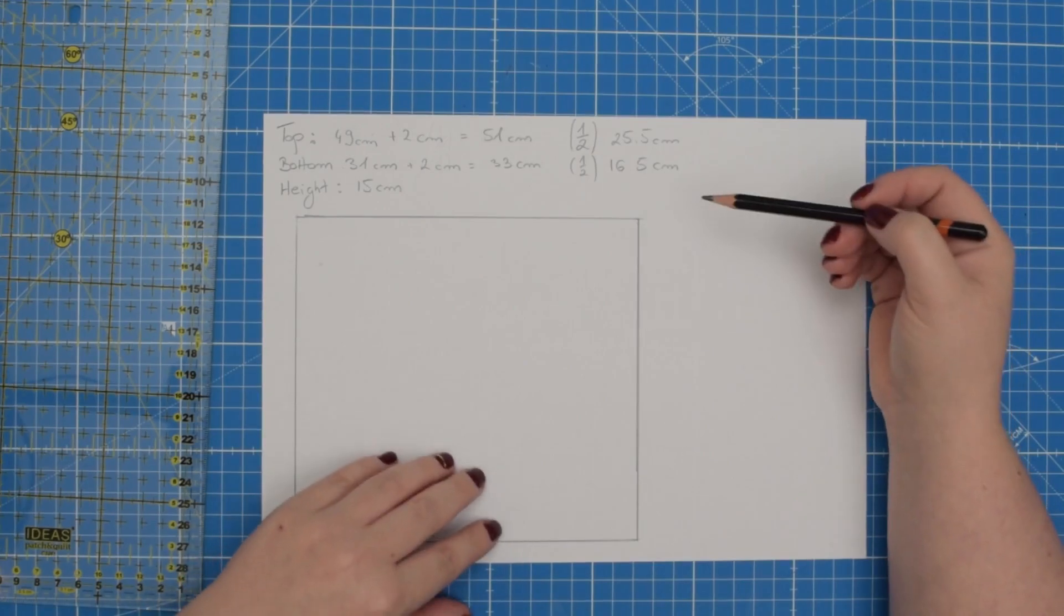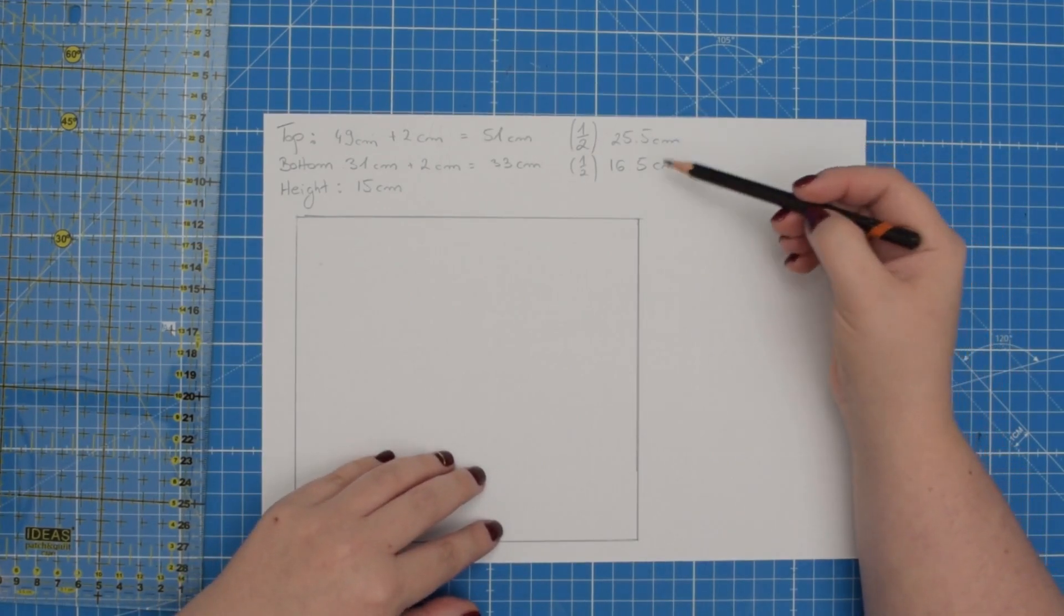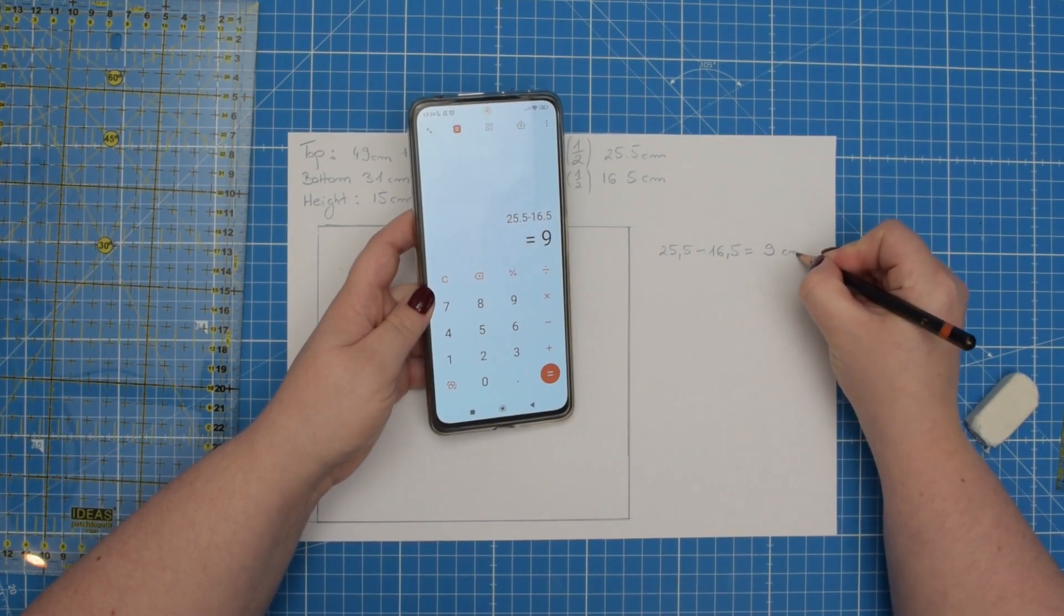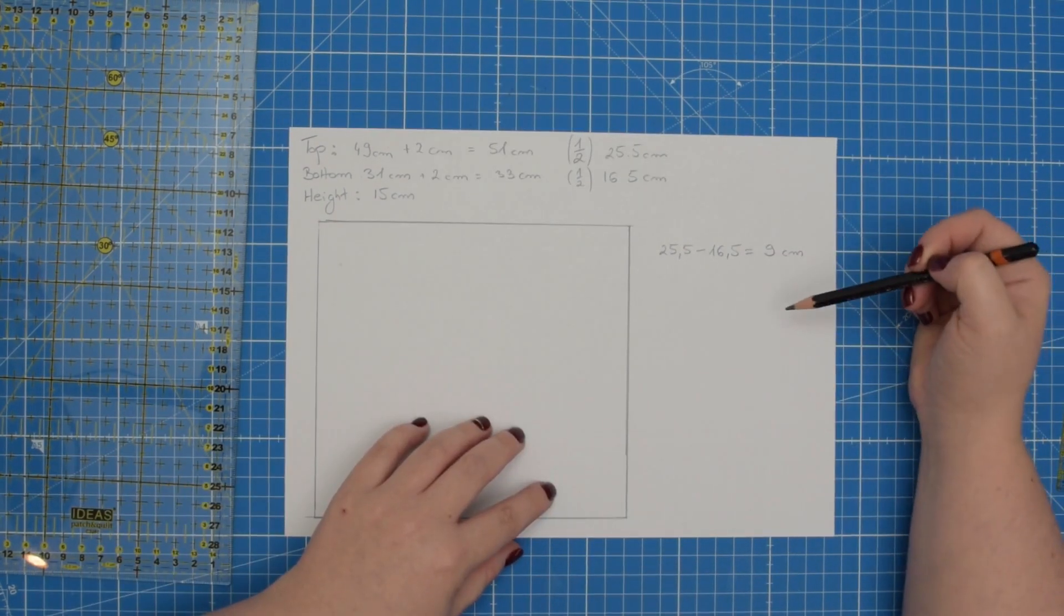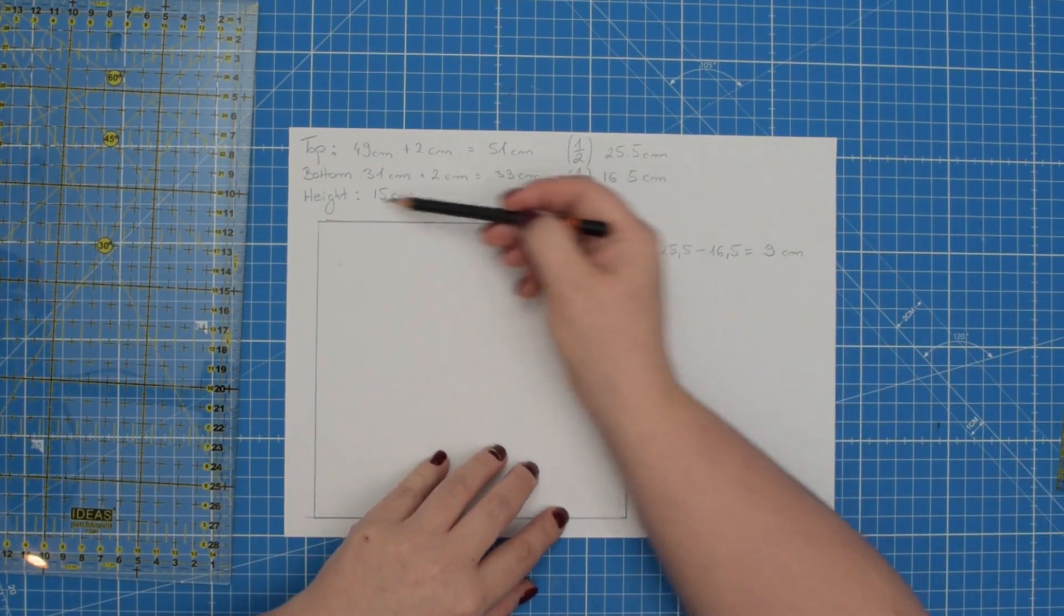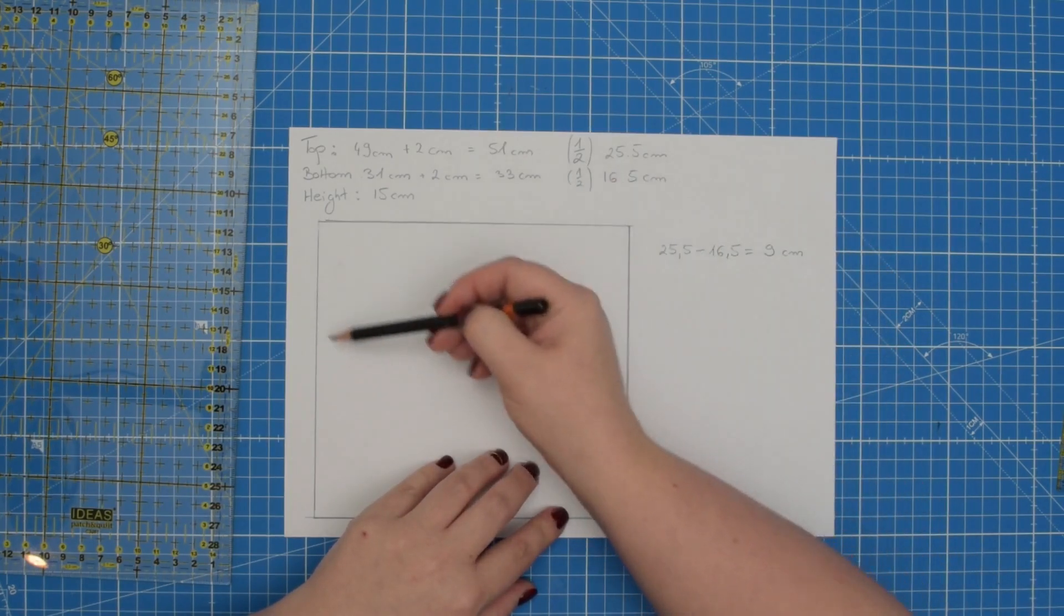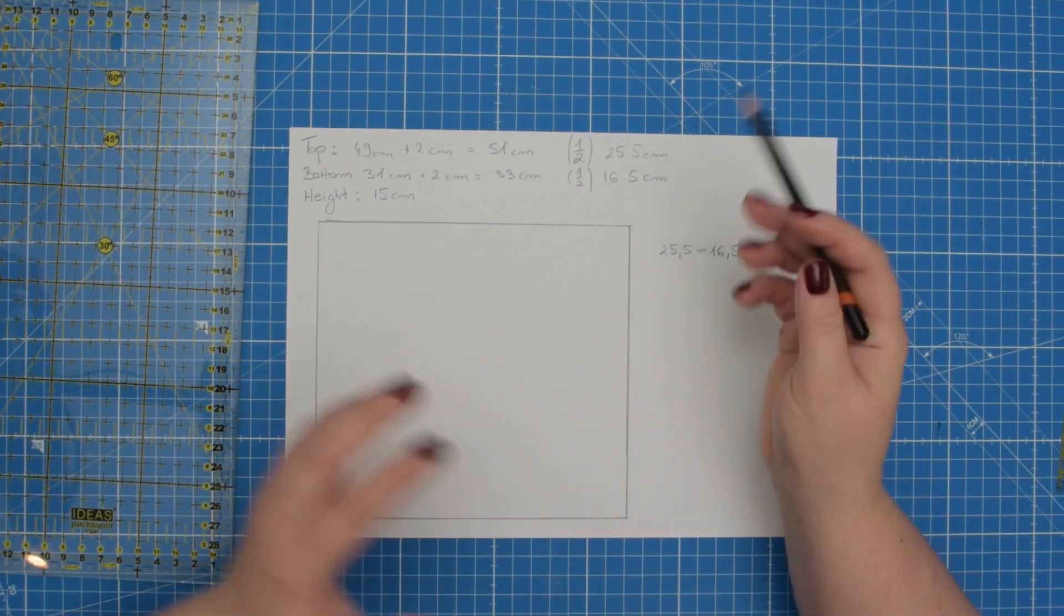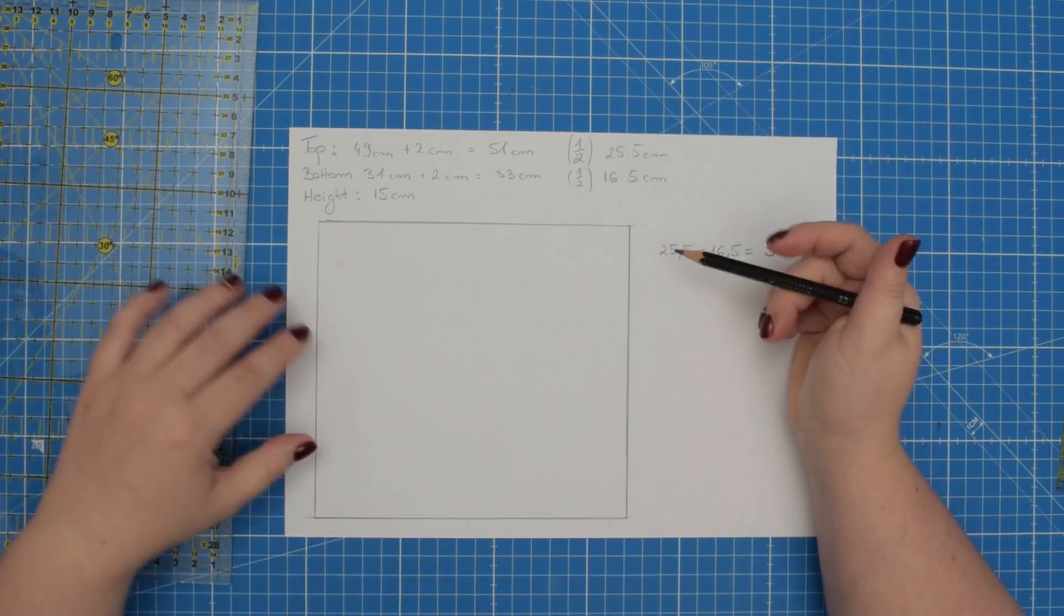Next you will need to calculate the difference between the top and bottom circumference and write it down. For me this is 9 cm which means I need to add 9 cm to the top portion of my pattern to create that nice shaping.